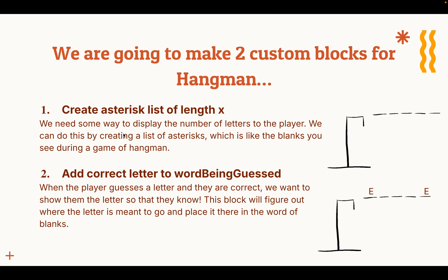The second custom block we have to make is 'add correct letter to word being guessed.' Word being guessed is a list we made which has all the player's guesses. When the player guesses a letter and they are correct, we want to show them the letter so they know where it is. This block will figure out where the letter is meant to go and place it in the word of blanks. For example, if the player started off with all blanks and then guessed the letter E, the E would go in the first and the last blank, helping the player figure out what the word might be.